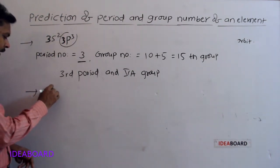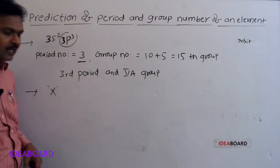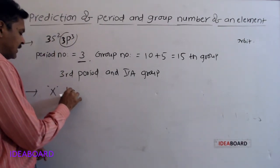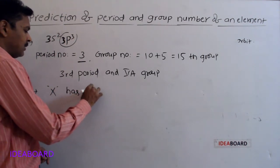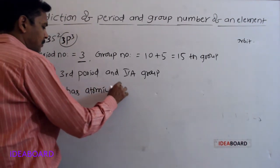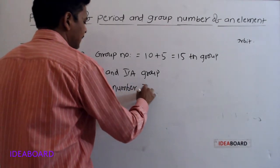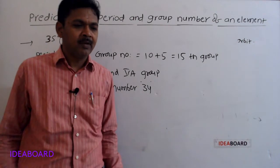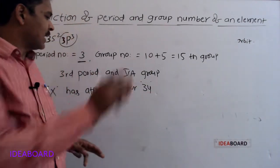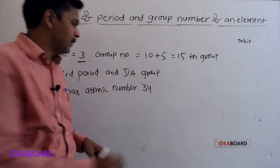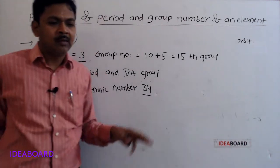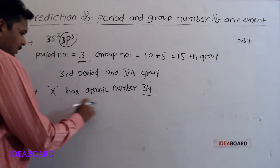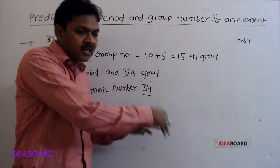One more question — an element X has atomic number 34. What is its position in the periodic table? To solve this, first we should know the atomic numbers of the zero group elements.